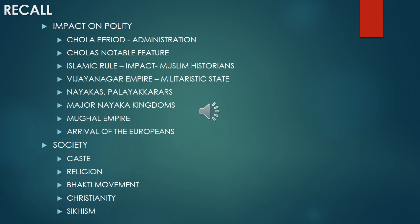Let's recall what we discussed in our previous class. We discussed about polity. First, the Chola period — the basic unit of local administration was the village, followed by Nadu, then Kotham. Tax-free villages were granted to Brahmins. Each village, sub-region Nadu, and district Kotham had an assembly. We discussed the assembly of each administrative unit.